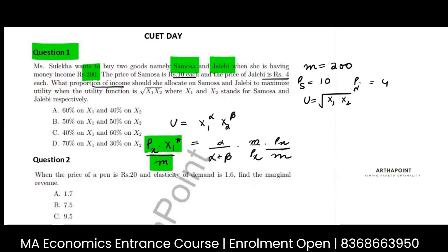So this is the expenditure on good x divided by income. This is expenditure of good x as a proportion of income of the consumer. And if I solve this, this gets cancelled, so this is nothing but it is simply alpha upon alpha plus beta.